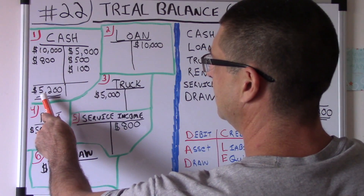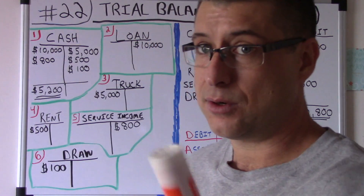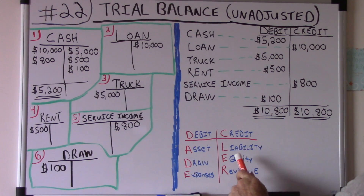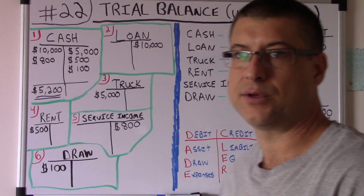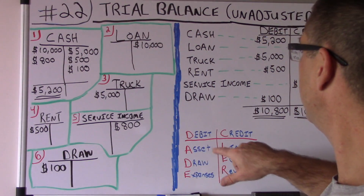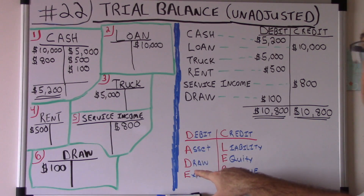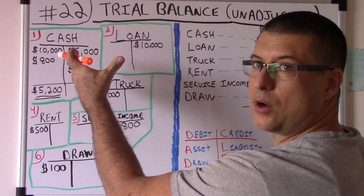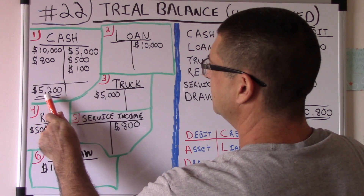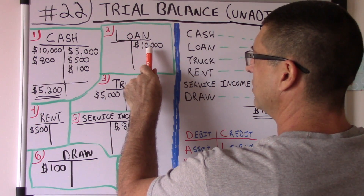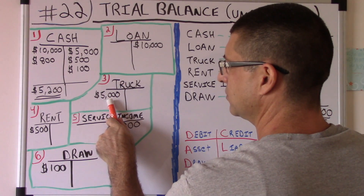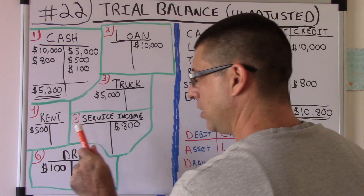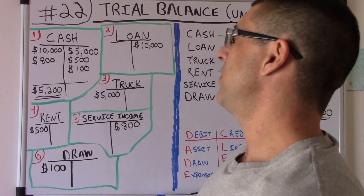Let's go over these quickly. Cash has a debit balance of $5,200. Remember the DC ADER rule — debit, credit, asset, draw, expense, liability, equity, revenue. Debits are always on the left, credits always on the right. We have: loan with a credit balance of $10,000, truck with a debit balance of $5,000, rent with a debit balance of $500, service income with a credit balance of $800, and draw with a debit balance of $100.